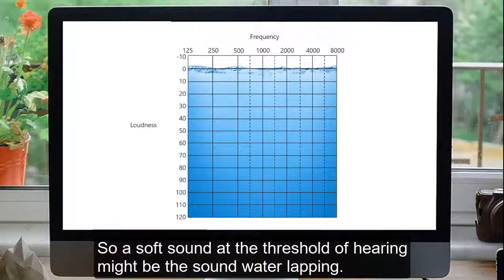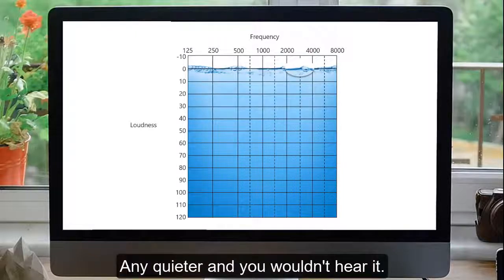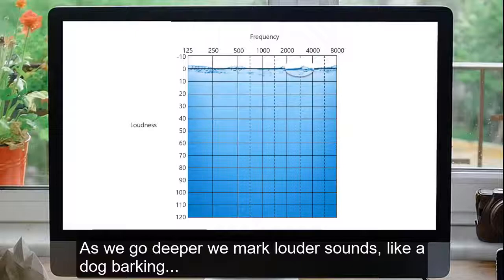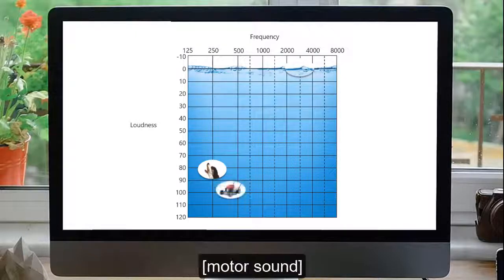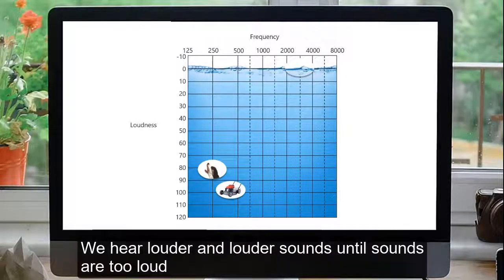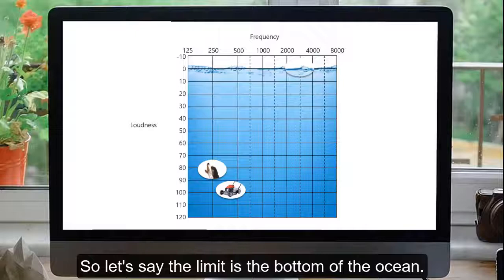A soft sound at the threshold of hearing might be the sound of water lapping. Any quieter, and you wouldn't hear it. As we go deeper, we mark louder sounds like a dog barking, or a lawn mower. We hear louder and louder sounds until sounds are too loud, and they start to become uncomfortable. Let's say the limit is the bottom of the ocean.